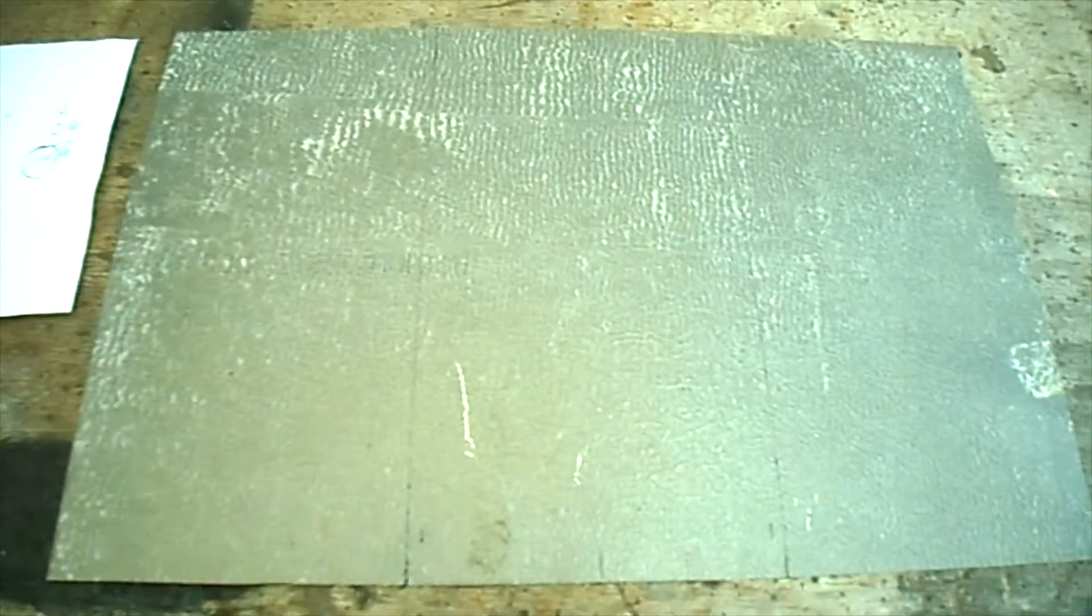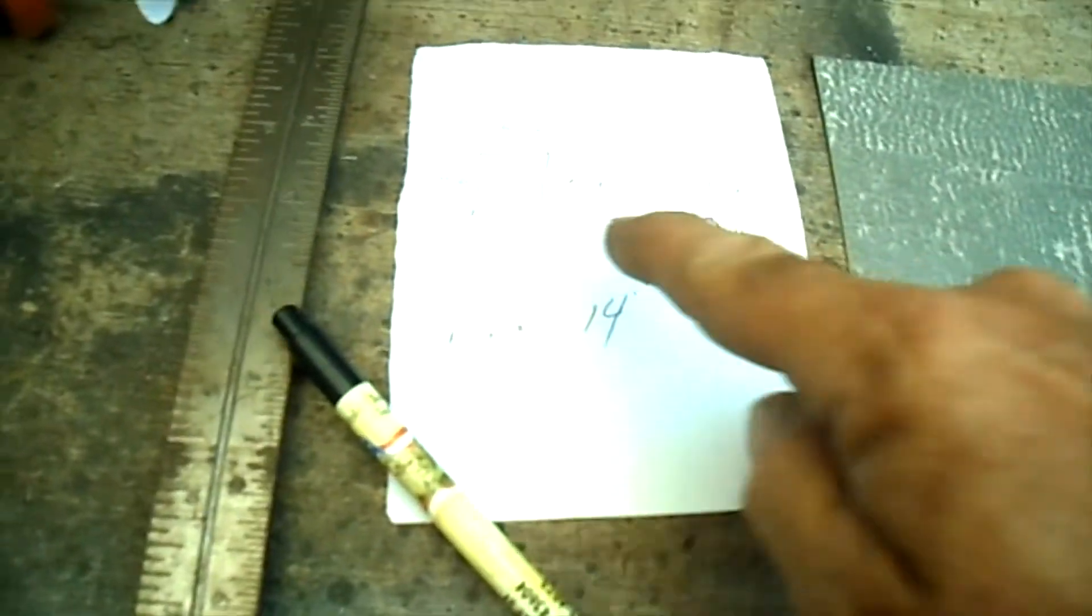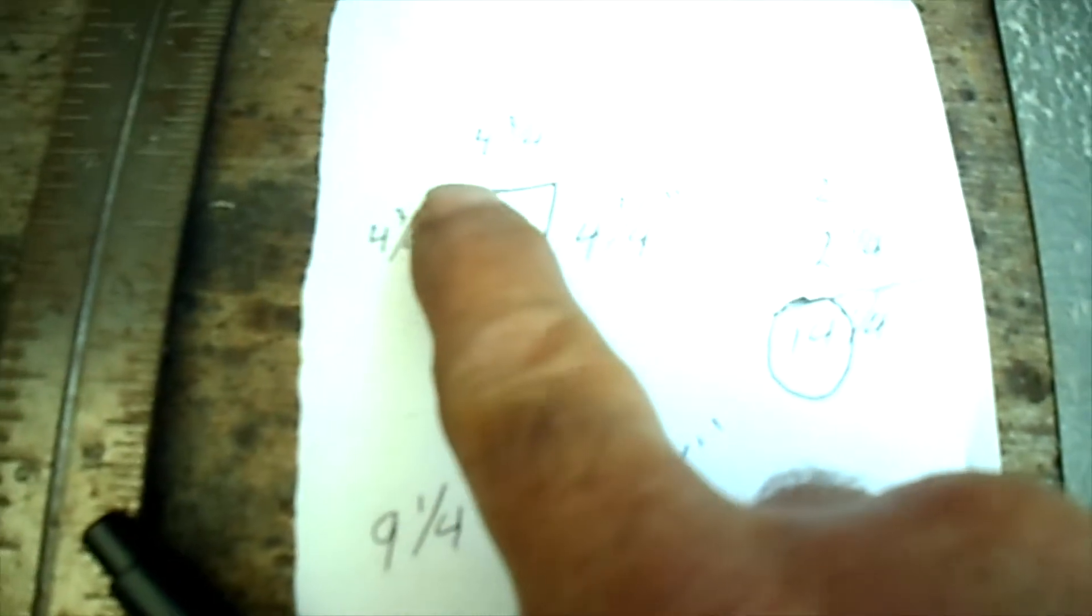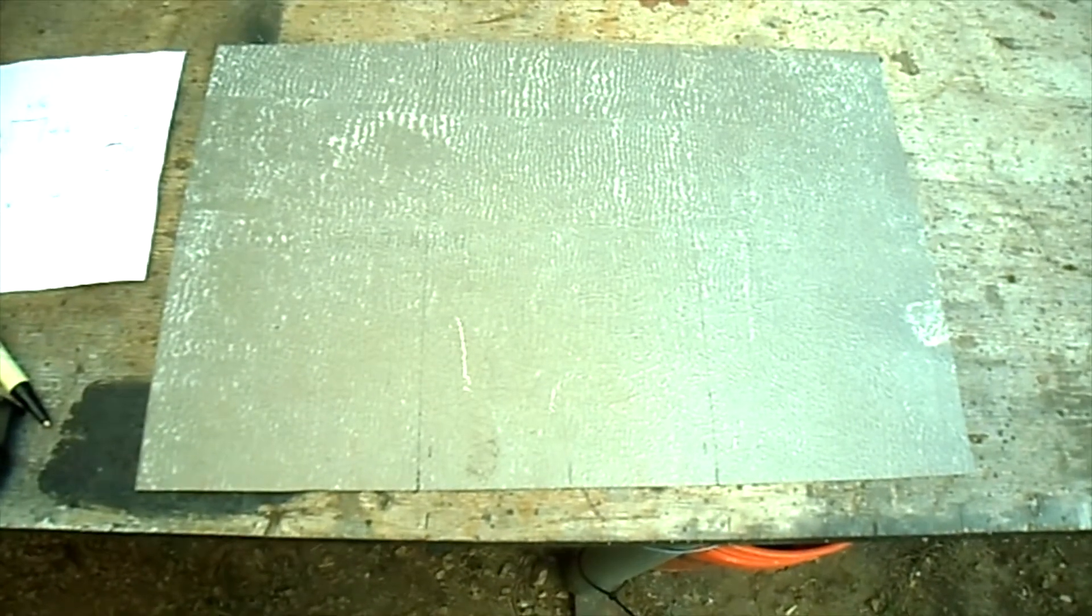Alright, I got our piece of metal cut down to nine and a quarter by 14. And also for our three bends I've got it marked at four and three-fourths, four and three-fourths, and four and three-fourths. So now we'll take it to the bender.